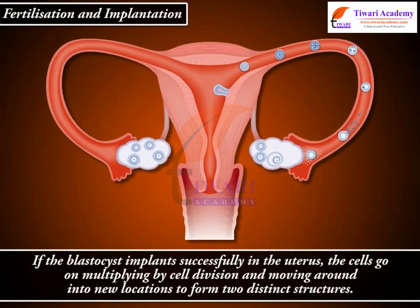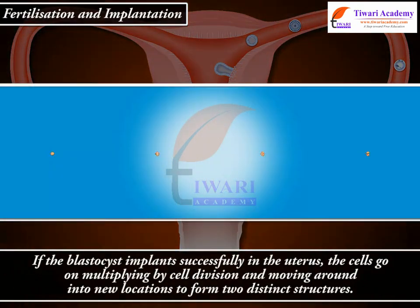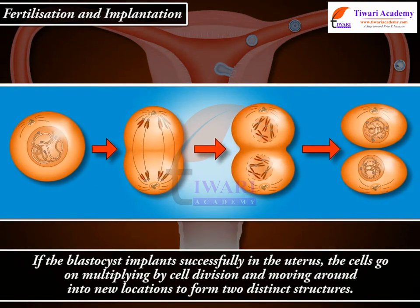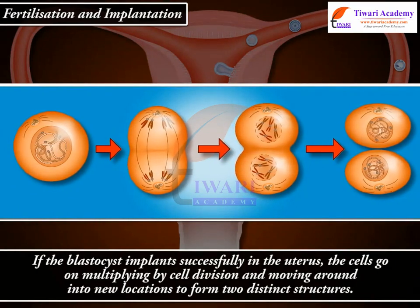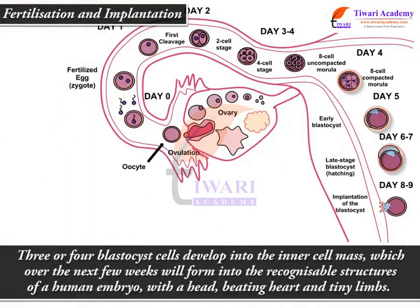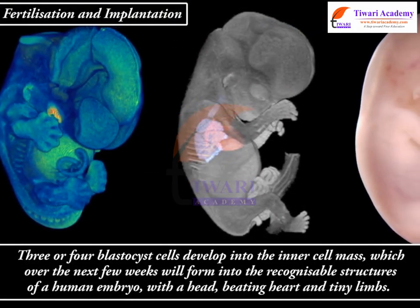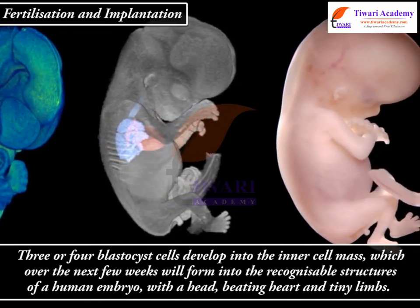If the blastocyst implants successfully in the uterus, the cells go on multiplying by cell division and moving around into new locations to form two distinct structures. Three or four blastocyst cells develop into the inner cell mass which, over the next few weeks, will form into the recognizable structures of a human embryo with a head, beating heart and tiny limbs.